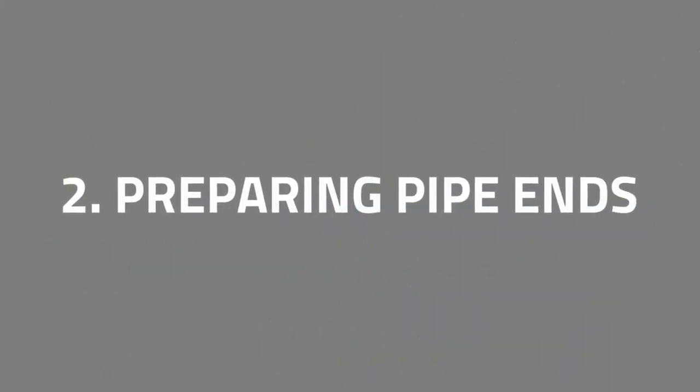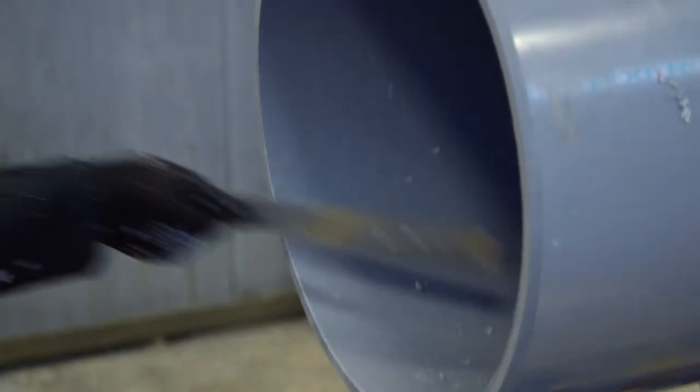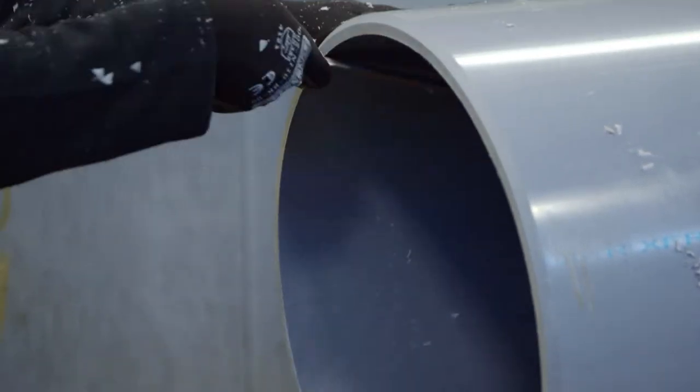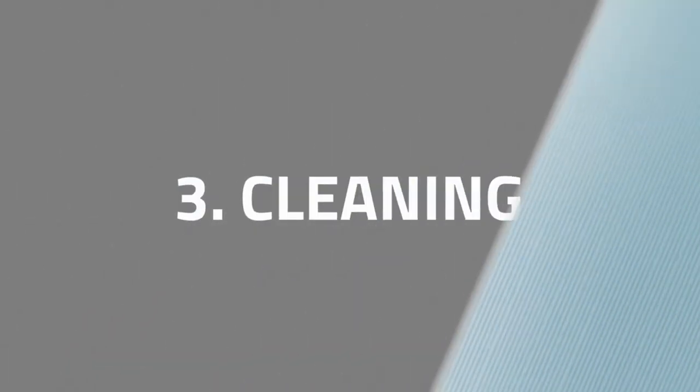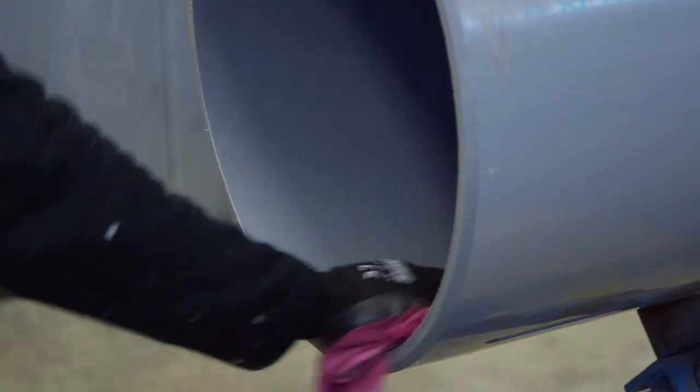Two: preparing pipe ends. Always bevel pipe ends. Remove burrs and filings from inside of the pipe using a knife edge or file. Three: cleaning. Using a clean, dry cloth, wipe any dirt and moisture from the fitting socket and pipe end.